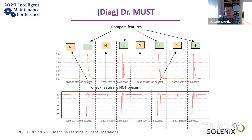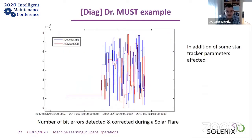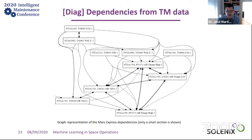For example, during a solar flare you can automatically identify which parameters are affected by radiation. We are also working on defining dependencies between parameters from data automatically, allowing us to understand system dependencies not from a model or simulator, but from the data itself. We have papers on this, but time is short — I want to give an overview of prediction examples.